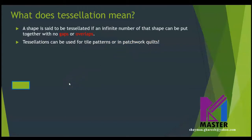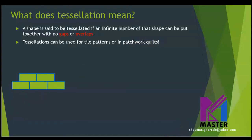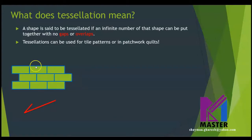Let's see by example a shape, which is a rectangle, how to tessellate this shape. I'm going to put many of this shape together and check: are there any gaps or overlaps? No. So in this case, we can say that rectangles can tessellate.